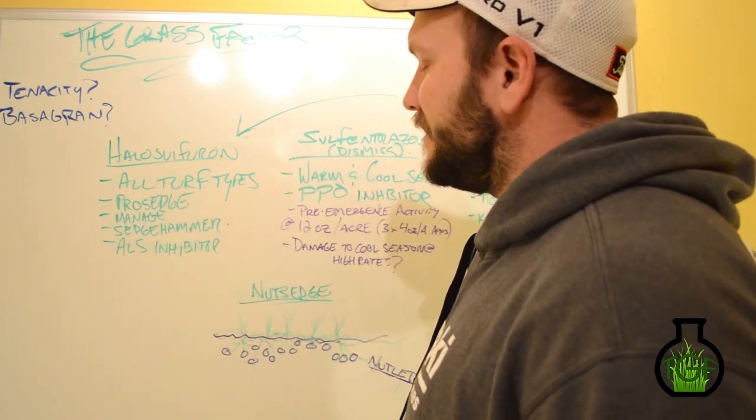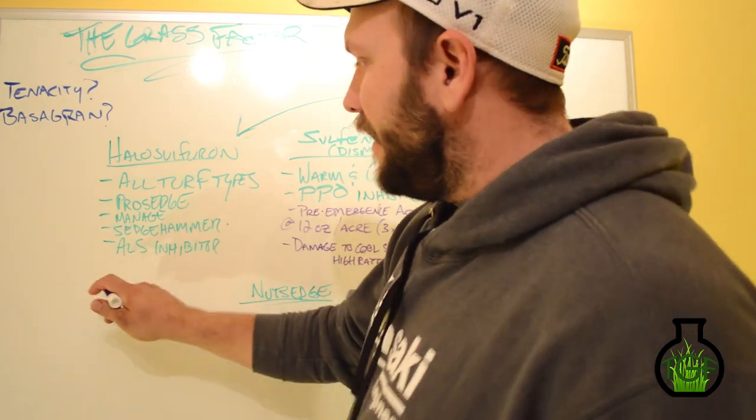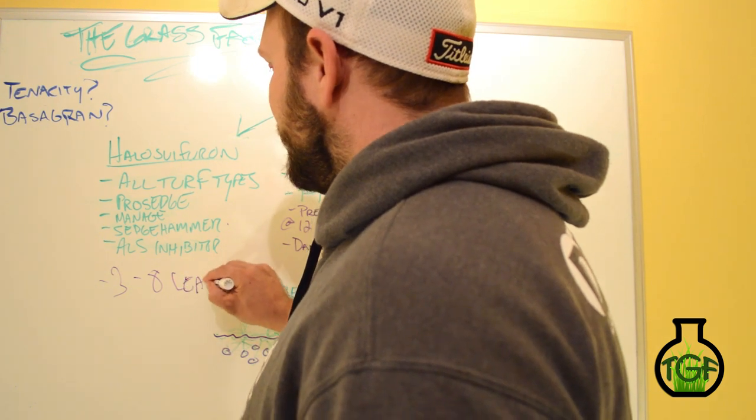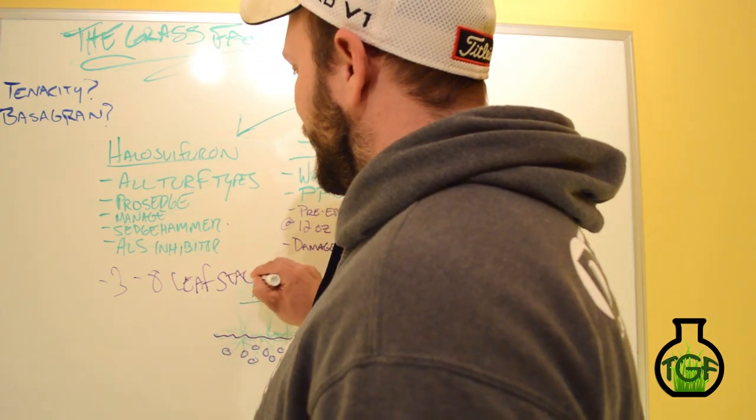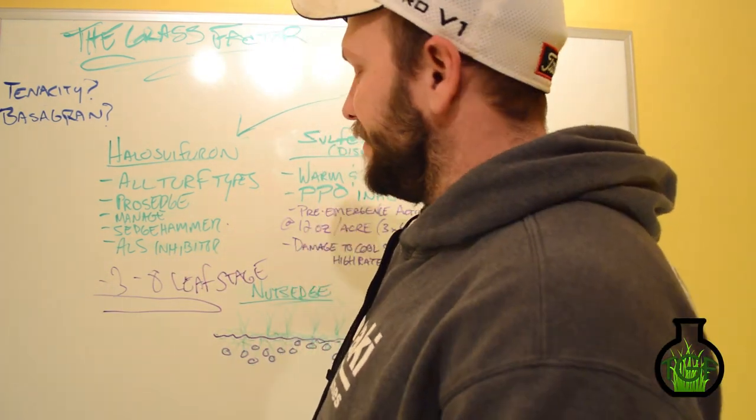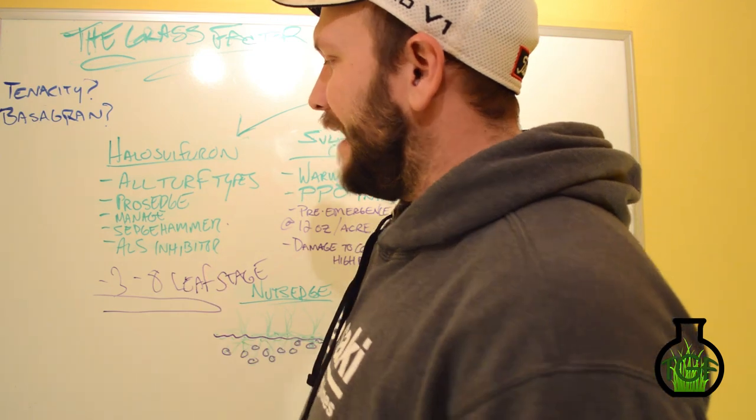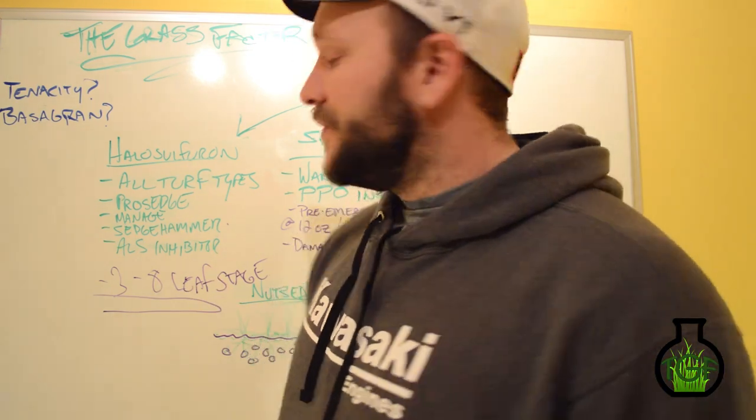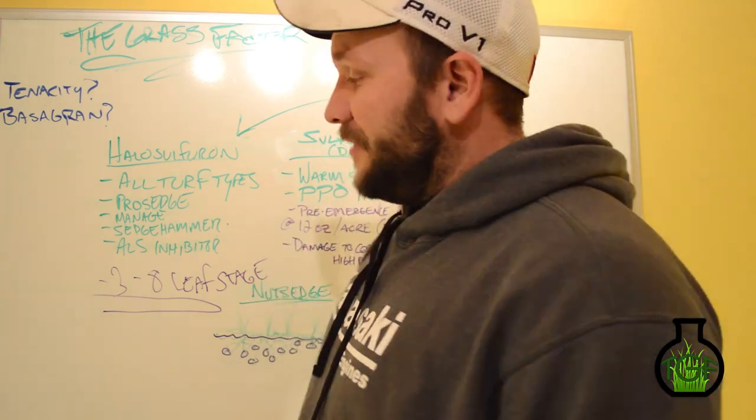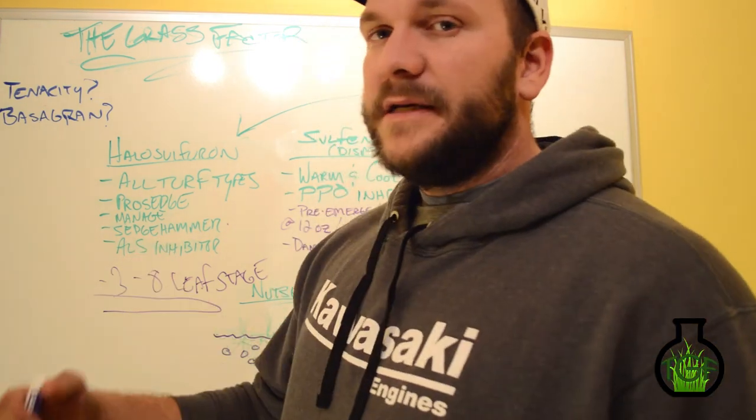Okay, so this is a positive thing to use. However, where we run into an issue when using halosulfuron is that halosulfuron is going to prefer the three to eight leaf stage. So outside of this leaf stage here, you're probably going to have to run into repeat applications. So if it's a new sedge plant that's just started to emerge and you spray it with halosulfuron, chances are you're not going to get very good control. If it's already going to seed multiple times, it's later in the season, maybe August, and you're still dealing with the same sedge plant, chances are you're not going to get great control out of halosulfuron with a single application.